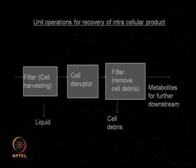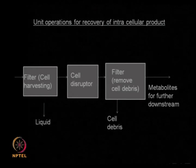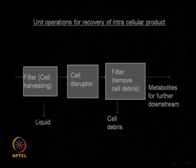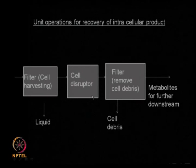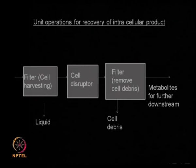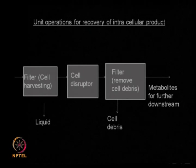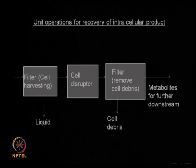Cell disruption could be mechanical, chemical, enzymatic, or a physical operation. We are going to spend more time on that. Once you have released the product from the cell, you need to filter the cell debris and the dead biomass, and then the liquid is going to contain your product of interest — the metabolite, a protein, or a small molecule.